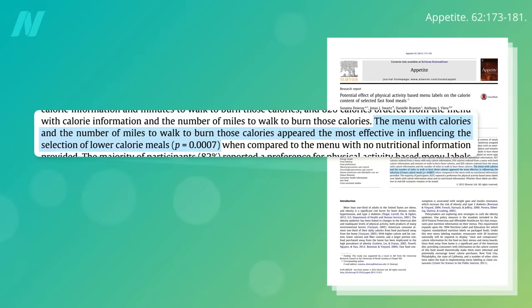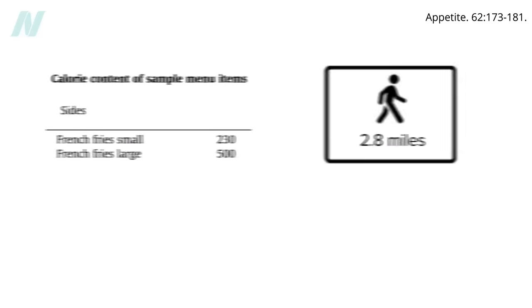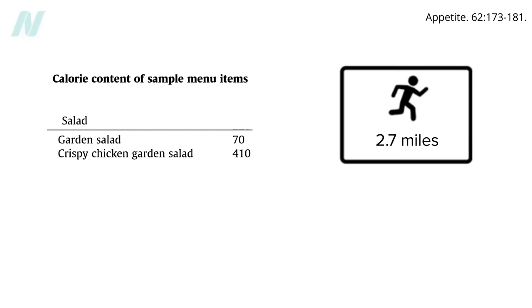Labeling fast food menus with little pictograms of exercising stick figures was found to help nudge people towards lower calorie options. Seeing that the decision to supersize your fries would mean walking an extra three miles that day, or that choosing the chicken salad over the garden salad could mean having to run nearly three miles, and people are more likely to make the healthier choice.